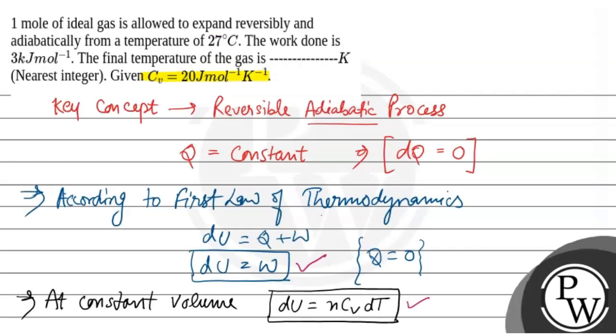In the equation, it is given that Cv equals 20 joules per mole per Kelvin, and the work done is 3 kilojoules per mole.